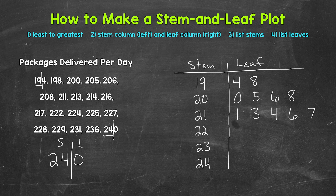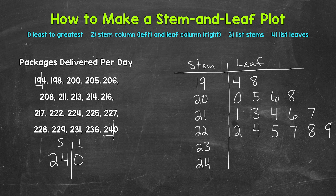Then 222 — stem of 22, leaf of 2. Then 224 — leaf of 4. Then 225 — leaf of 5. Then 227 — leaf of 7. Then 228 — leaf of 8. Then 229 — leaf of 9. Next 231 — moving to the 230s, stem of 23, leaf of 1. Then 236 — stem of 23, leaf of 6. And then lastly, 240 — stem of 24, leaf of 0. And that's it for our leaves.